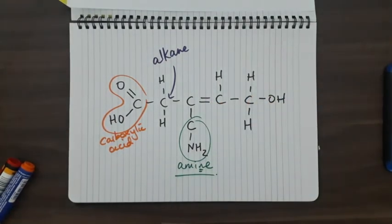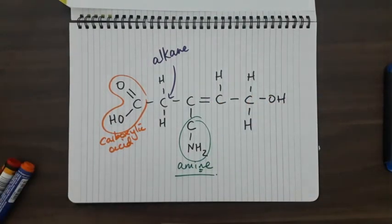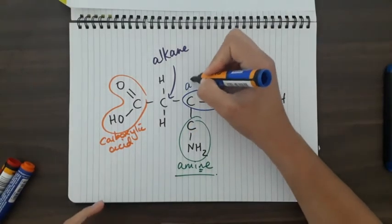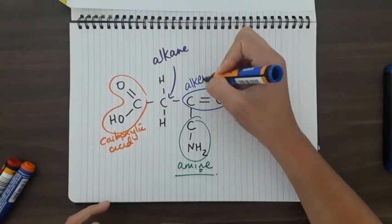Moving across, a double bond between carbons represents an alkene.